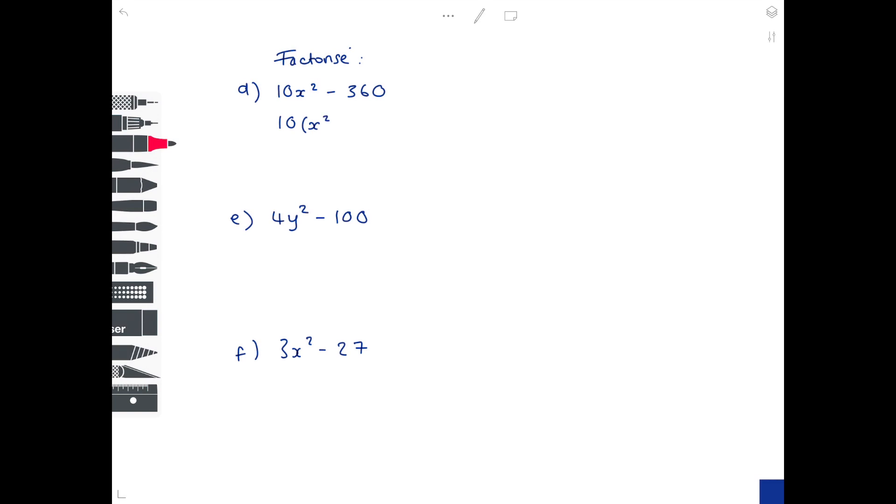So we're going to bring that 10 outside the bracket and work out what we need to multiply to get 10x squared. Well that's obviously x squared. What do we need to multiply 10 by to get minus 360? Well that would be minus 36. And now this term inside the brackets, we can do our normal finding the difference between two squares. So bring that 10 out, have two brackets. We know that the x goes at the front of the brackets, we know we need a plus and a minus. So what number multiplied by itself equals 36? Well that is 6. So that is your final answer.